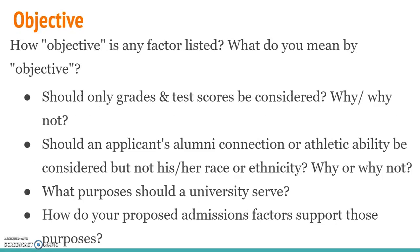When looking at how objective any factor really is — what do we mean by objective? Do you think it should only be grades and test scores? Should an alumni connection or athletic ability be considered, but not race or ethnicity? Why or why not? What is a university there for — what's its purpose, and how do you propose admissions factors support those purposes?